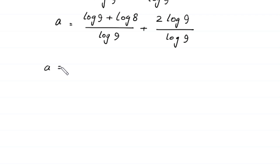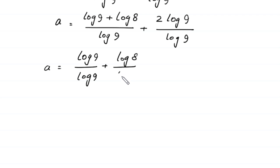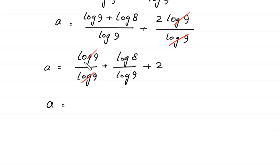Next, a is equal to log of 9 plus log of 8 over log of 9, which can be written as log of 9 divided by log of 9 plus log of 8 divided by log of 9, plus this log of 9 will be cancelled out with this log of 9 and here we are left with 2. So a is equal to 1 plus log of 8 divided by log of 9 plus 2.